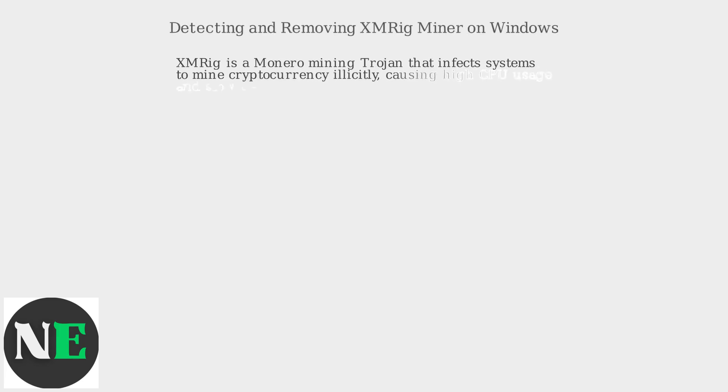XMRig is a Monero mining trojan that infects systems to mine cryptocurrency illicitly, causing high CPU usage and slow performance.